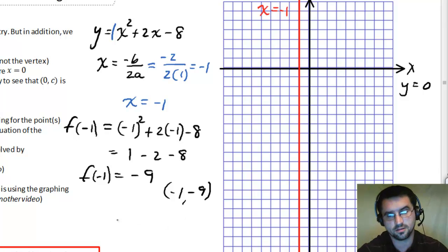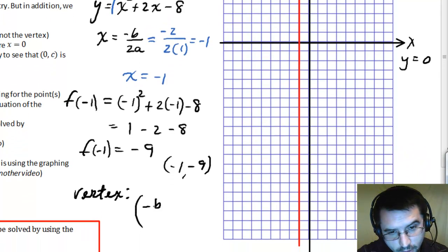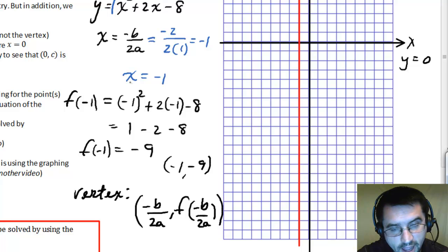Because finding the vertex normally takes those two steps, the vertex is often expressed as an ordered pair with x as negative b over 2a and y as f of negative b over 2a. And I think that makes sense. You get the x from the axis of symmetry, which is negative b over 2a, and then you do f of that x to find y.